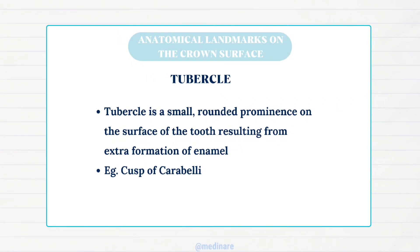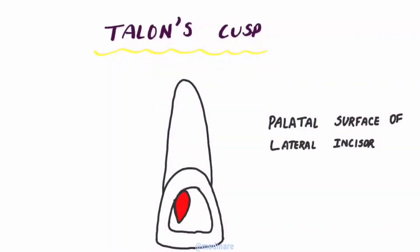Tubercle is a small rounded prominence on the surface of the tooth resulting from extra formation of enamel. Tubercles are usually deviations from the normal form. For example, the cusp of Carabelli is a tubercle — the fifth cusp present on the palatal surface of maxillary first molars. Similarly, talon cusp is present on the cingulum of permanent maxillary lateral incisors. We also have dens evaginatus, an accessory cusp or globule of enamel on the occlusal surface of premolars. In this diagram you can clearly see the talon cusp on the palatal surface of the lateral incisor.